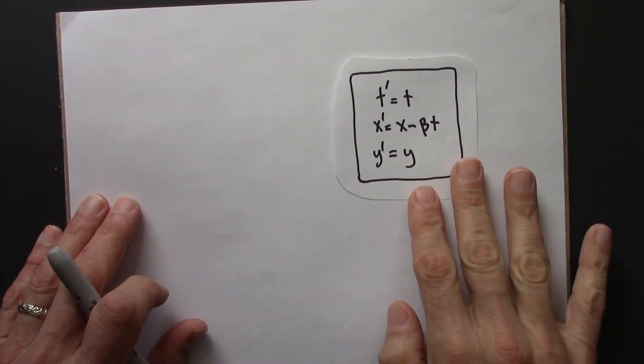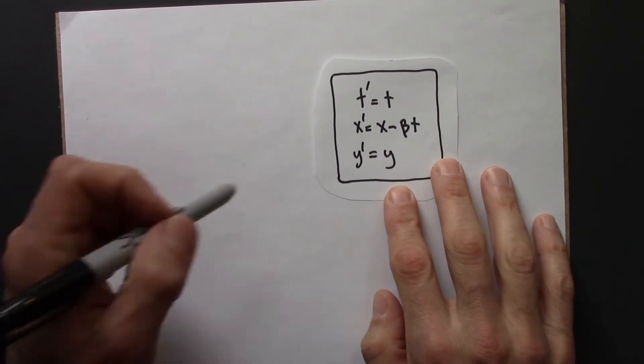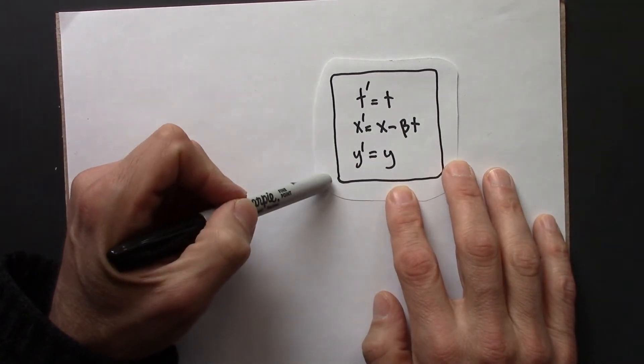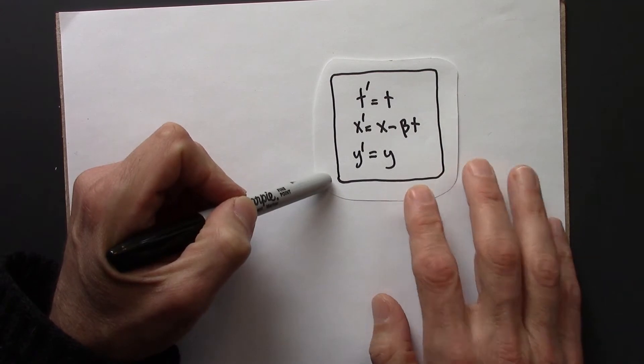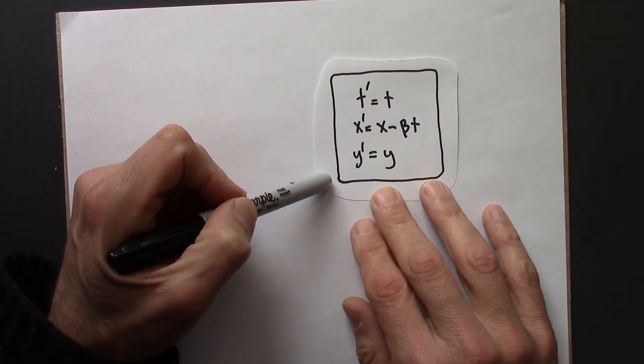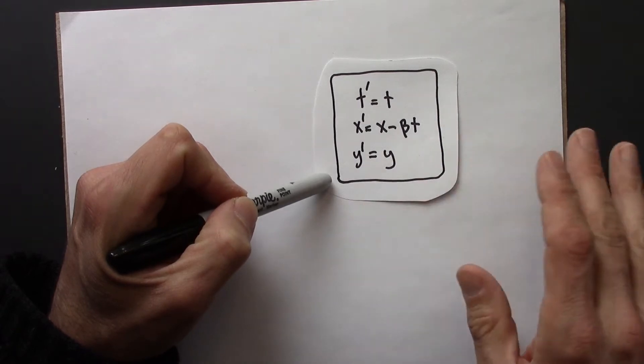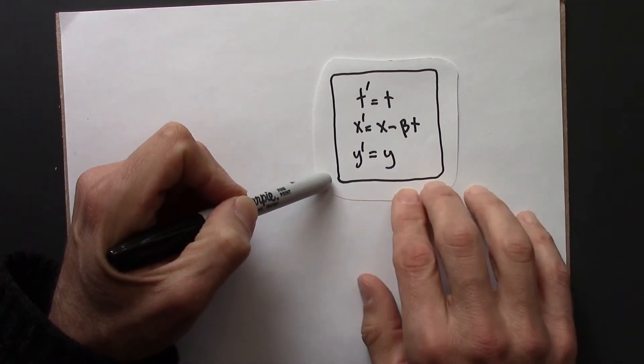All right, so first, let me show a solution using these. So these are the Galilean transformation equations, and they tell us how to convert from measurements in one frame to measurements in another frame. Think of them as a dictionary, translating from one language to another.